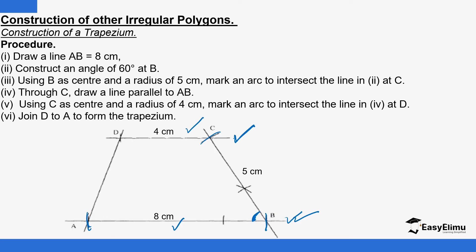You can use a set square or a ruler and a pair of compasses only to draw the line through C parallel to AB. Then, knowing that point D is 4 centimeters from C, you use C as the center and make an arc to locate point D. Finally, you complete the four-sided figure by joining A to D and the trapezium is drawn. It's that simple — it's an application of what you've learnt previously.